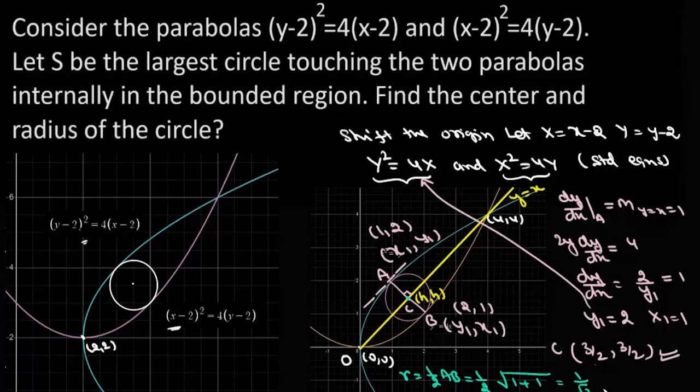But we need the center for the original parabolas, not the standard parabolas. So we know capital X is 3/2 and capital Y is 3/2, so we replace: x-2 = 3/2 and y-2 = 3/2.